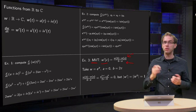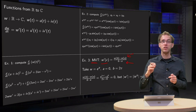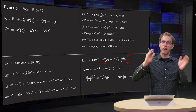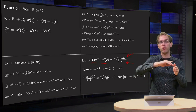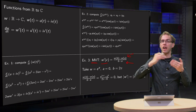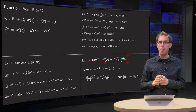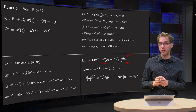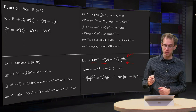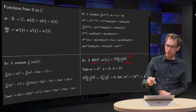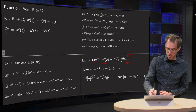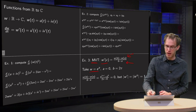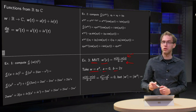It basically says: if you have some continuous function, you always have some point between a and b where you travel at an average speed. This does not hold anymore in the complex case. For example, if you take w to be the exponential function, a = 0 and b = 2π.